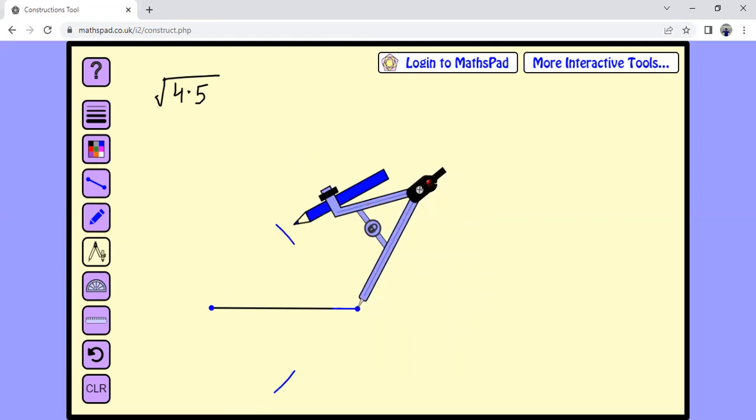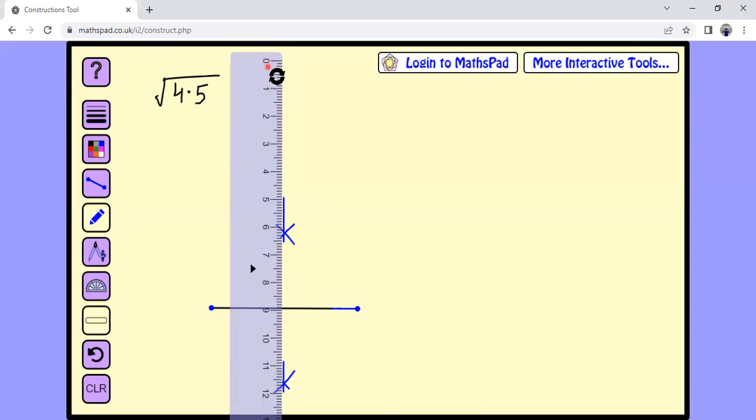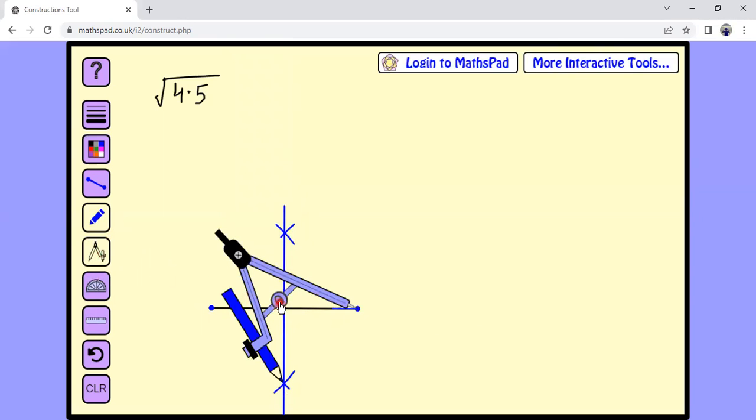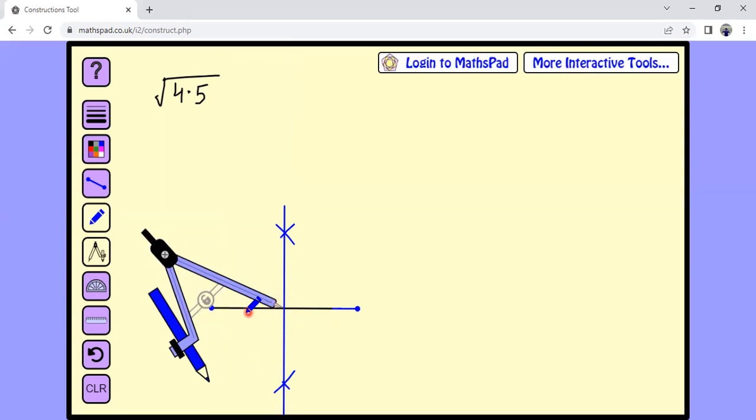This helps us to locate midpoint of this line segment. I'm going to slightly move it this way and join these points. That is the perpendicular, and once you have located the midpoint of this line segment...